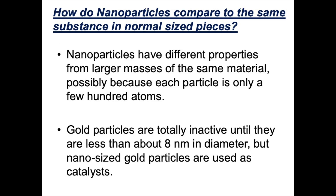What's really exciting about nanotechnology is that nanoparticles have different properties to the substance in its bulk state. For example, if you take just a tiny speck of gold made up of billions and billions of gold particles, gold is quite unreactive and certainly doesn't have any catalytic properties. However, if you were to have just a small number of gold atoms, gold would suddenly have a different set of properties — nano gold is used as a catalyst.